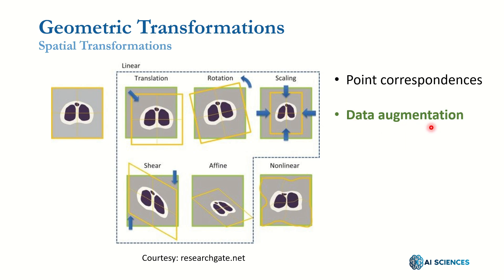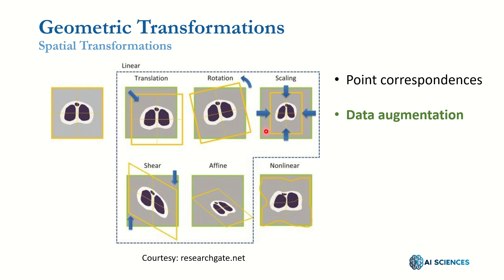Another very important application is data augmentation, particularly for convolutional neural networks. The data available for training a large CNN may not be sufficient or may lack variety. One solution is to transform a given image into several variants using translations, rotations, scalings, and similar transformations — generating new images. This is called data augmentation, and it has proven to significantly improve the performance of convolutional neural networks.